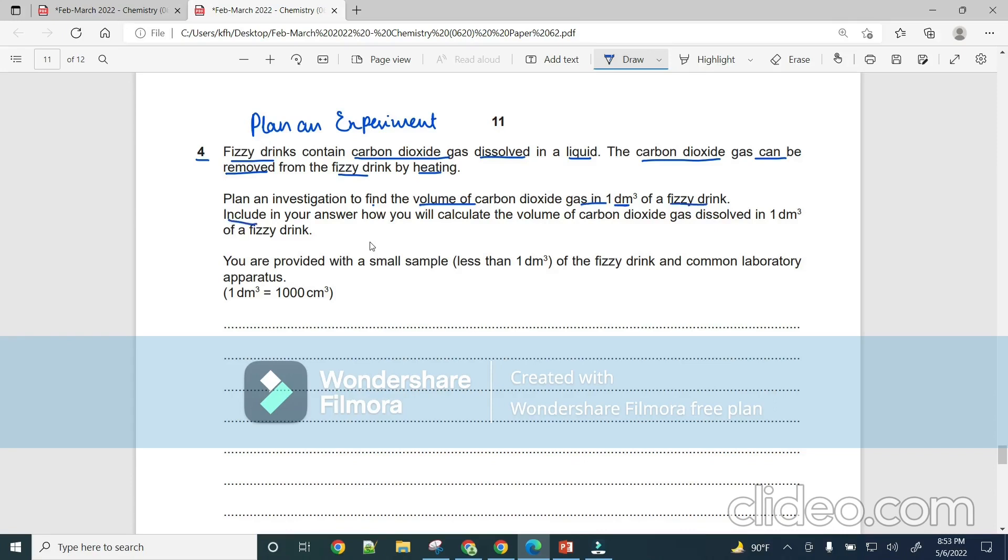Include in your answer how you will calculate the volume of carbon dioxide gas dissolved in 1 cubic decimetre of a fizzy drink. You are provided with a small sample less than 1 cubic decimetre of the fizzy drink and common laboratory apparatus. And they also told the conversion 1 cubic decimetre equals 1000 cubic centimetres.